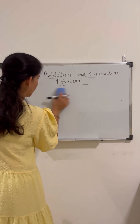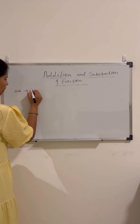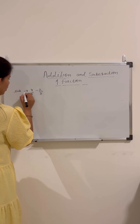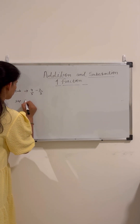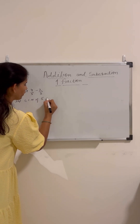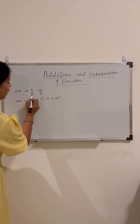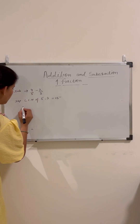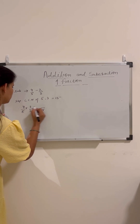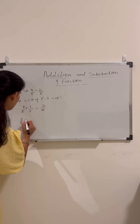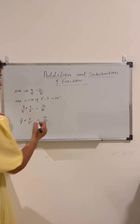Now let us see how we subtract unlike fractions. Let us take the example: subtract 2 by 3 from 4 by 5, that is 4 by 5 minus 2 by 3. The first step is to find the LCM of 5 and 3, which is 15. We then find the number to multiply each fraction by to get the LCM. For 4 by 5, multiplying by 3 gives 12 by 15. For 2 by 3, multiplying by 5 gives 10 by 15.